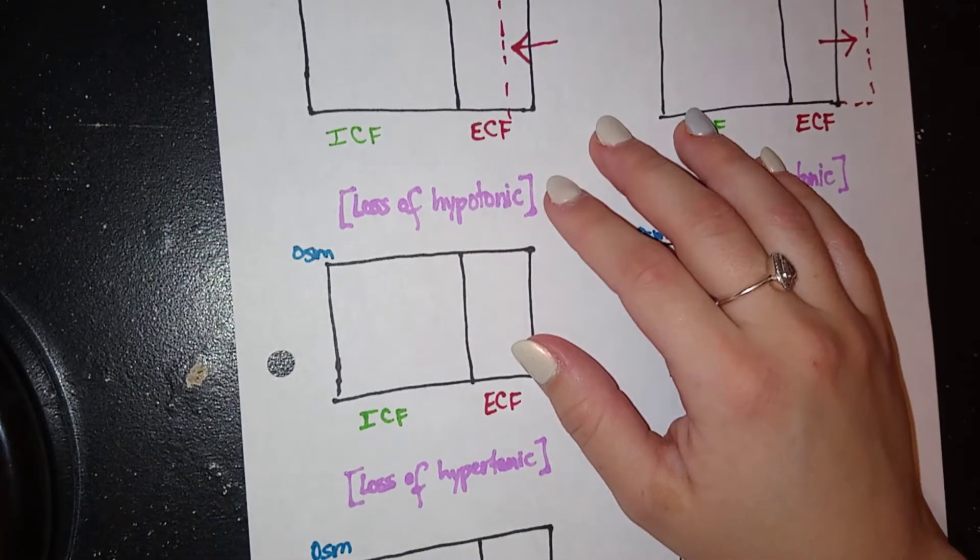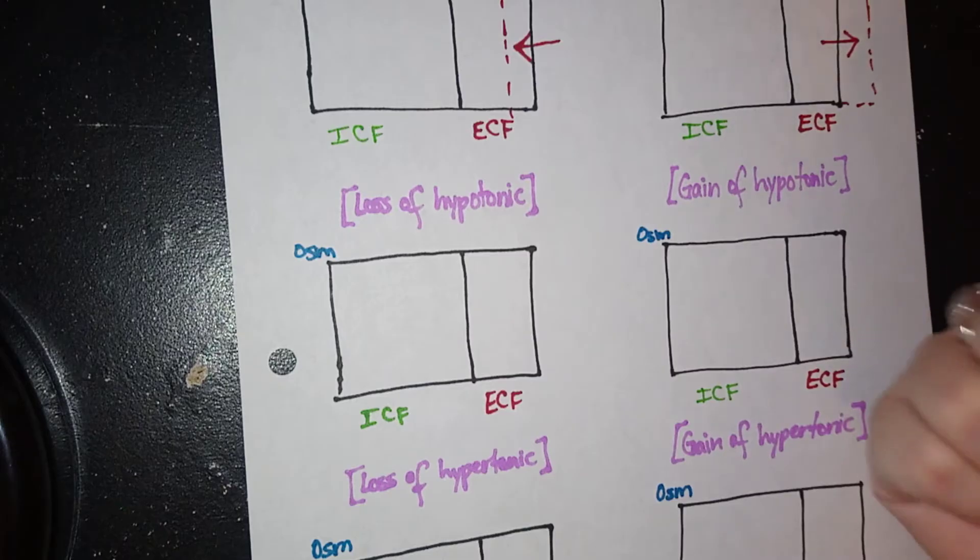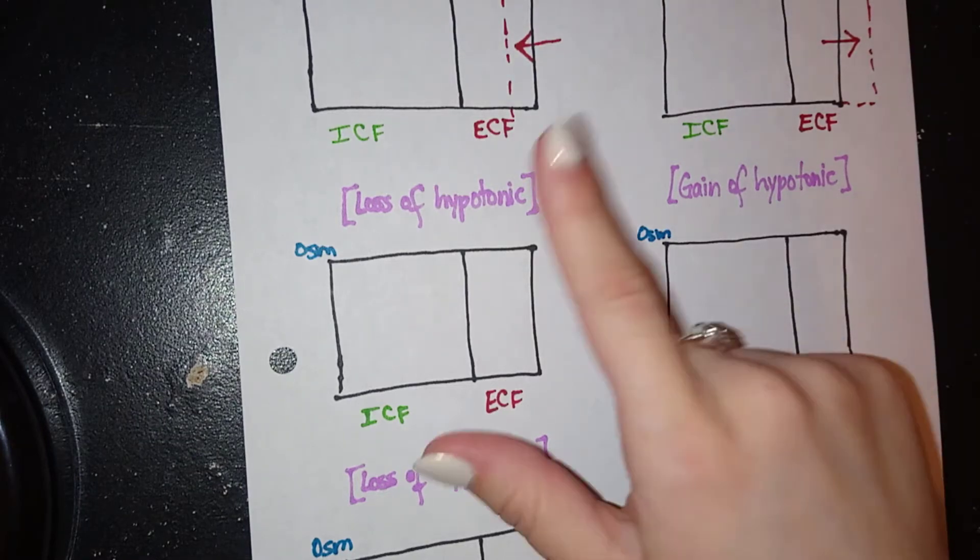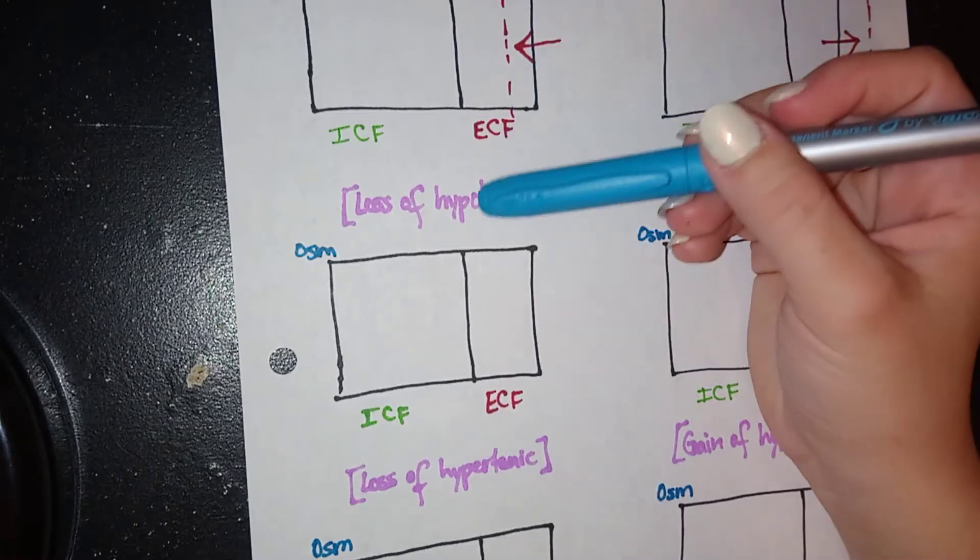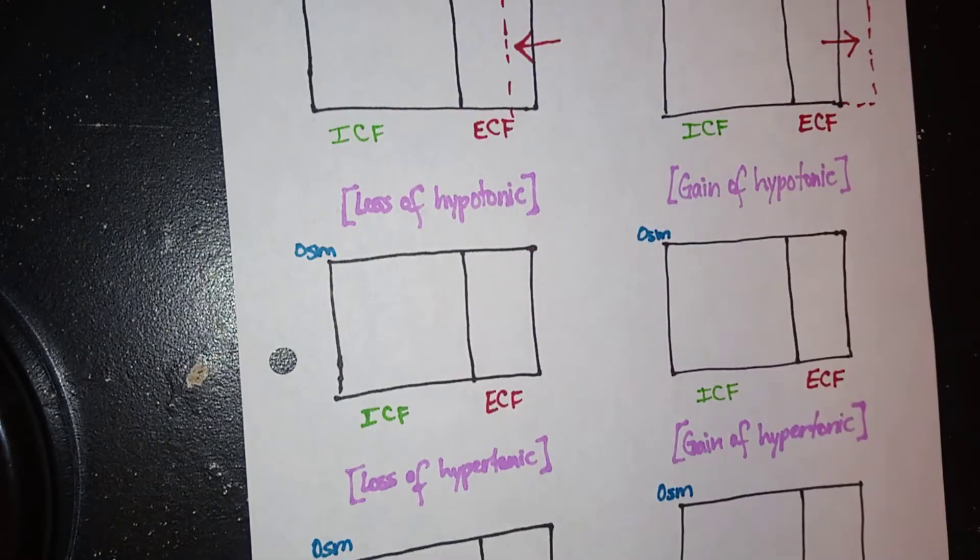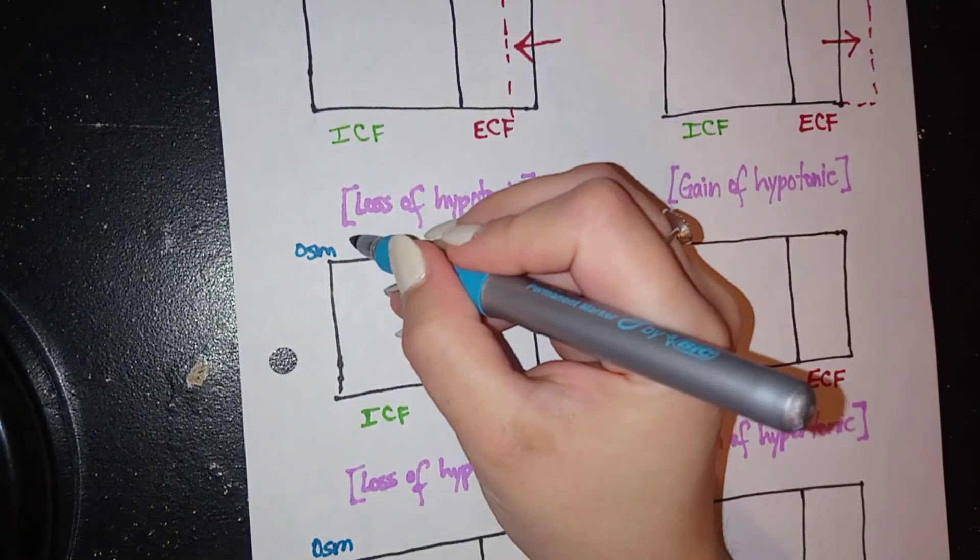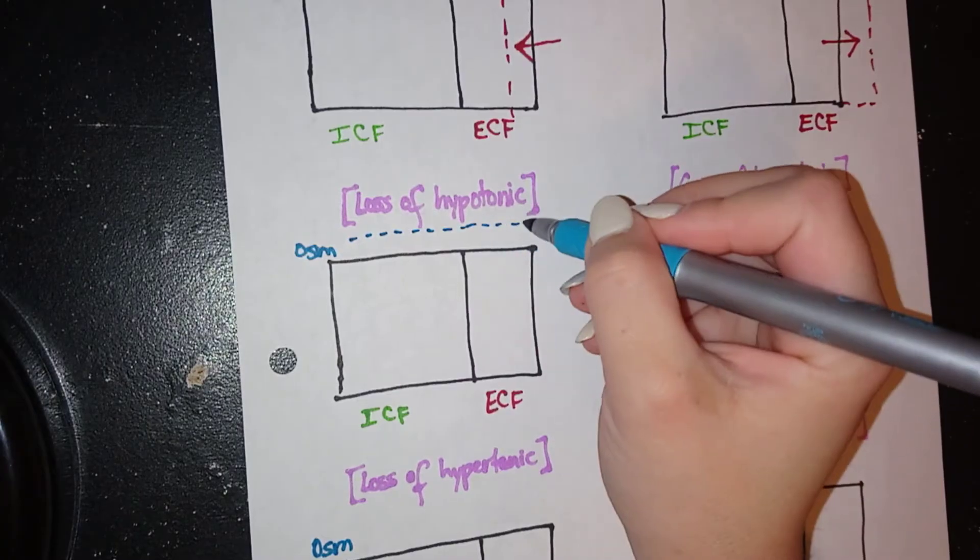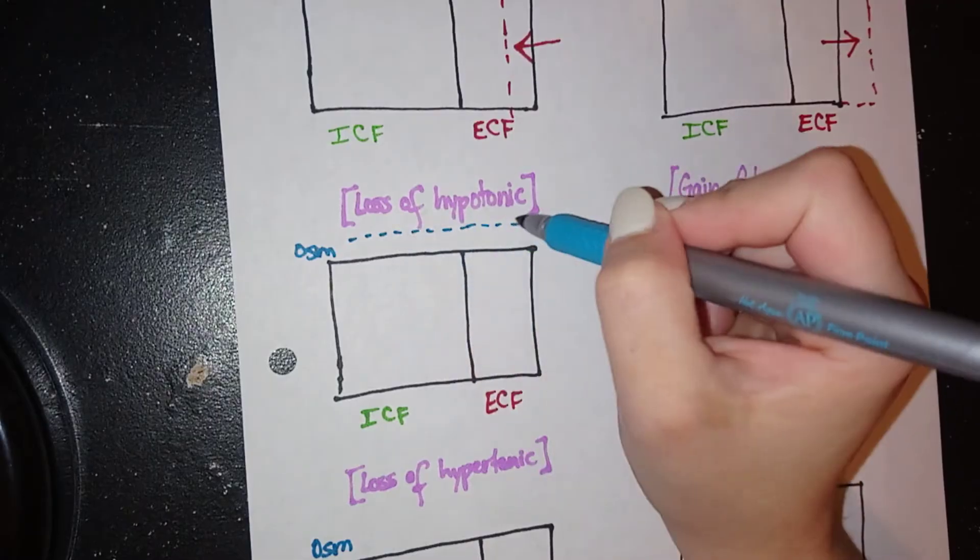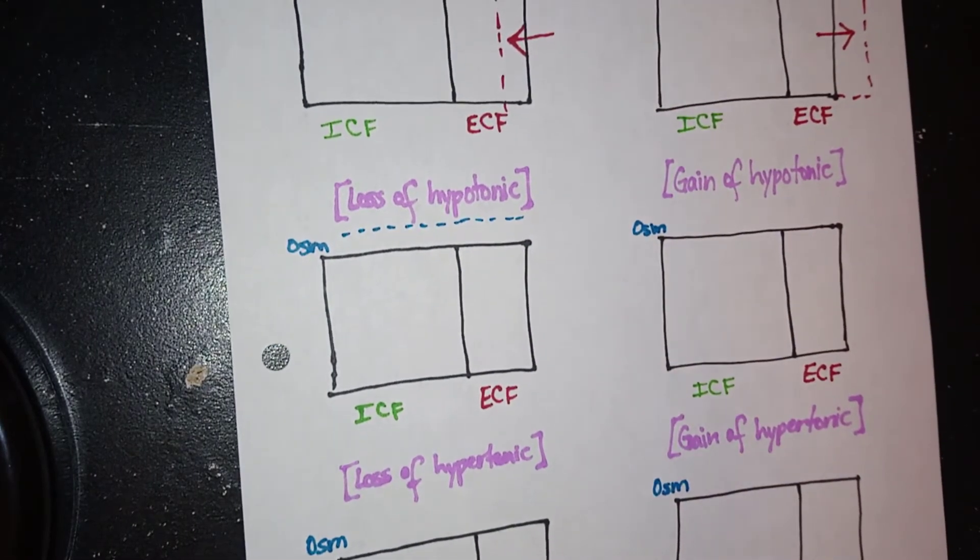So in the case of losing hypotonic fluid, meaning I'm losing mostly water, examples of this would be losing it in the urine in diabetes mellitus or in diabetes insipidus. It could be due to dehydration. In this case, since we are losing more water in the urine, the osmolarity in our blood will actually go up. Because we've lost more water, we've got more salt or solutes in our blood now.